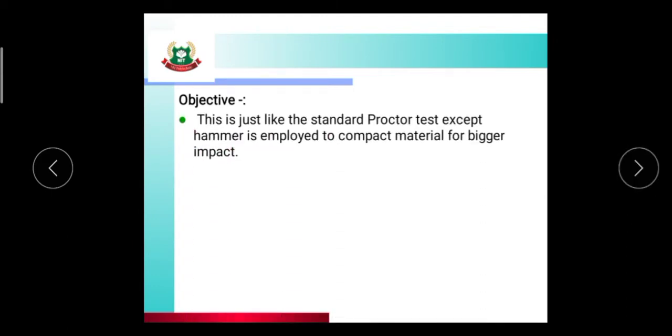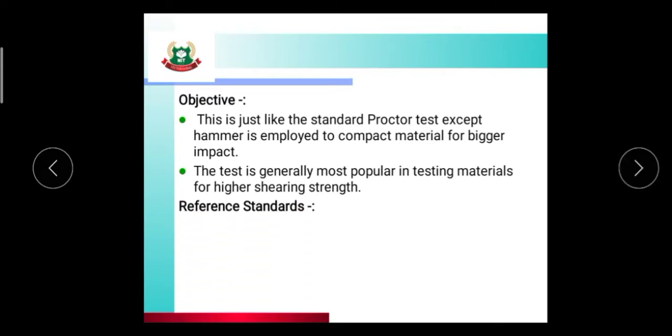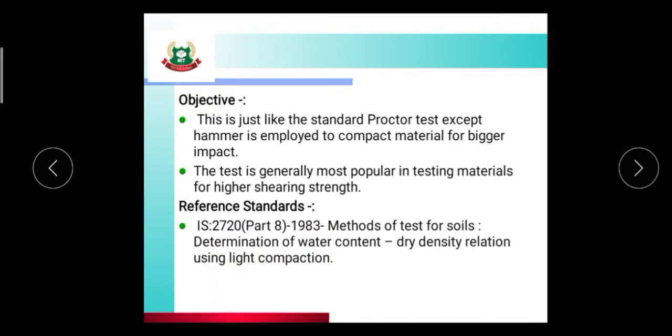This is just like the Standard Proctor Test except a heavier hammer is employed to compact material for a bigger impact. The test is generally most popular in testing materials for higher shearing strength. The test reference standard is IS 2720 Part 8 1983, method of test for soils and determination of water content dry density relation using light compaction.